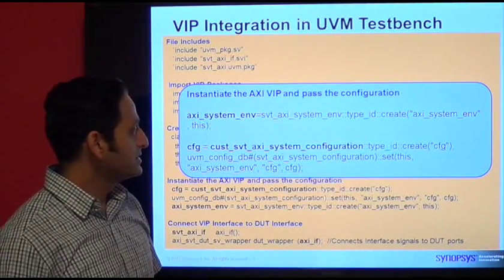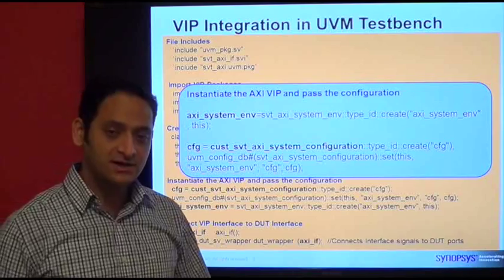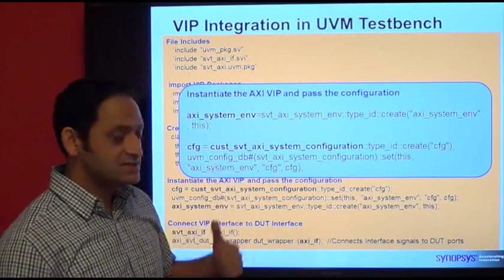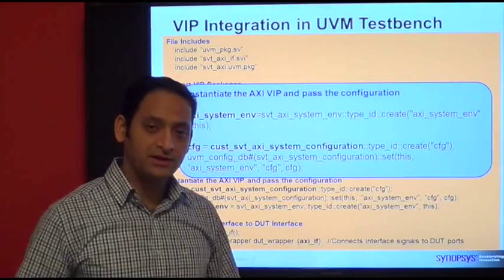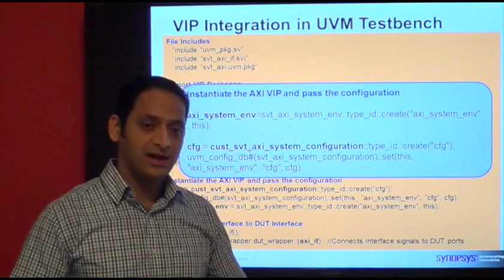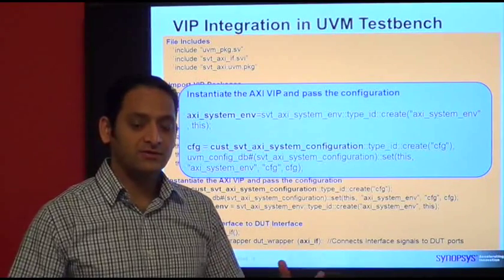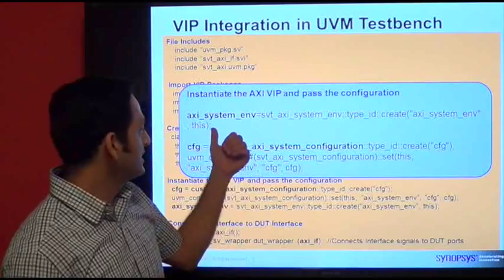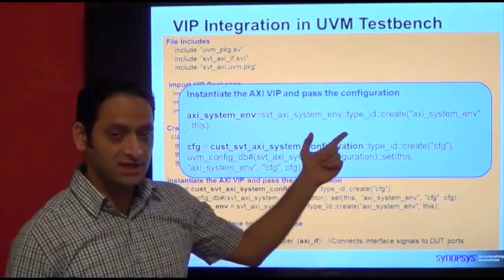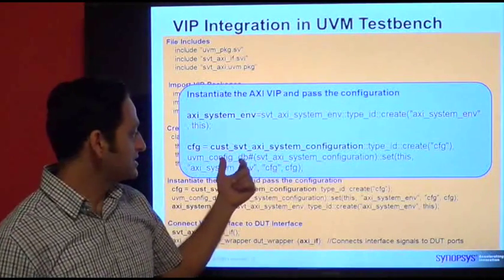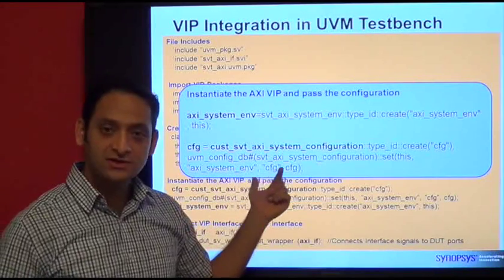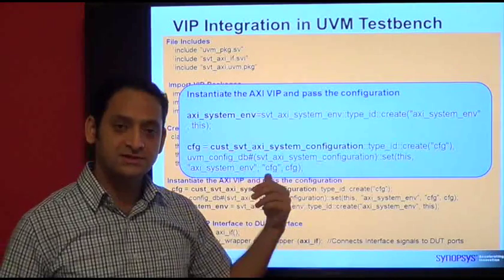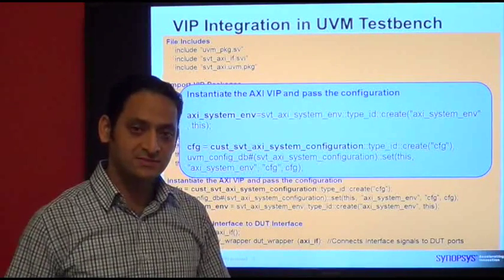Once you have created the configuration class matching your DUT, you need to instantiate the VIP component, which will apply that configuration and expand into the specified number of masters and slaves. You instantiate the AXI system ENV, create an object of the configuration class from the previous step, and pass it using UVM config DB to the respective AXI system ENV.